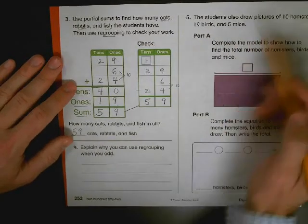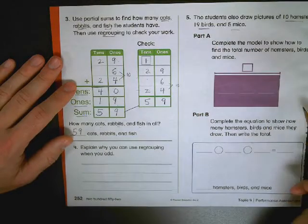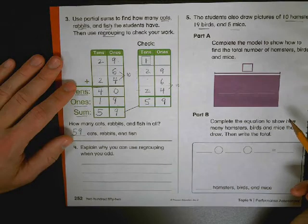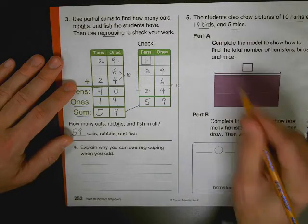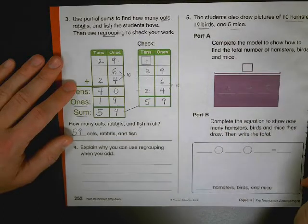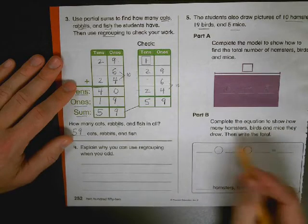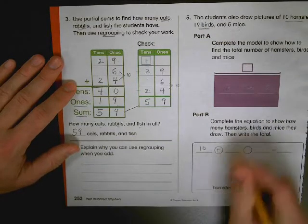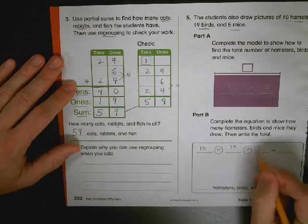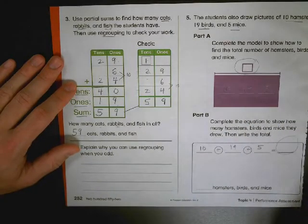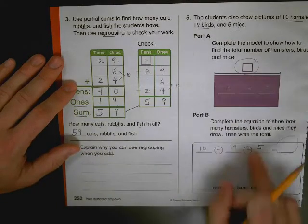Five. Students also drew ten hamsters, nineteen birds, and five mice. Complete the model. Ten, nineteen, five. Then part B. Complete the equation to show how many hamsters, birds, and mice. So you're doing a model up here for the same problem: nineteen and five. You're just doing it twice, two different ways. Model here, so you're trying to find this answer and this answer exactly the same. This is an equation. This is a model.